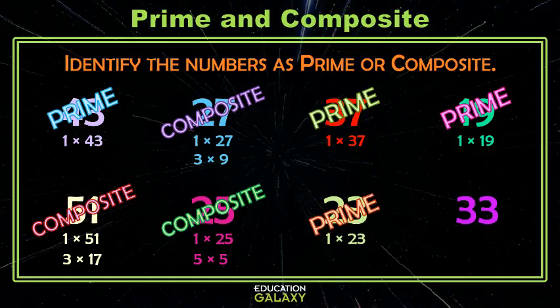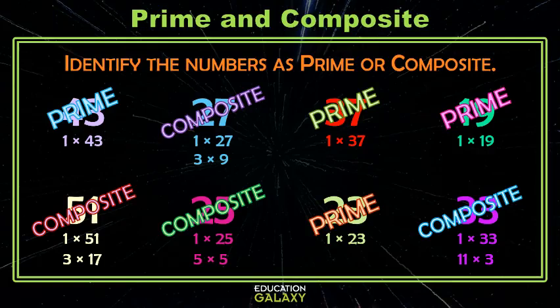And last, we have 33. We know 1 and 33. And can you think of anything else? Looks like one of our 11s — 11 times 3, which makes this one composite. Now you are a prime and composite number expert. Go forth and practice some on your own.